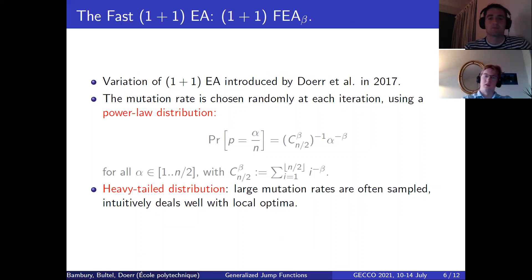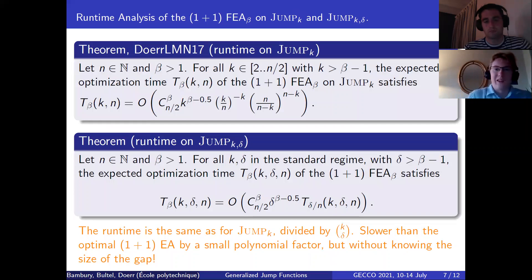Now a second algorithm that is a variation upon the (1+1) evolutionary algorithm, and that was introduced by Doerr and collaborators in 2017, is the following, the fast evolutionary algorithm. It relies on randomness in the choice of the mutation rate, so the value of p will now change depending on the iteration you're looking at, and this will be sampled using a heavy-tailed power law distribution. So p can take values between 1 over n and n over 2 over n. This is given by the formula you can see here. Keep in mind that beta is a small constant, usually 1.5, and that the first term here is just a normalization constant. The whole point of this algorithm is that it's robust in the sense that we do not need to know beforehand the size of the gap for it to run in its optimal way.